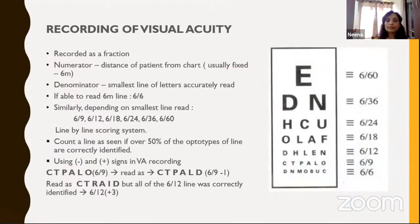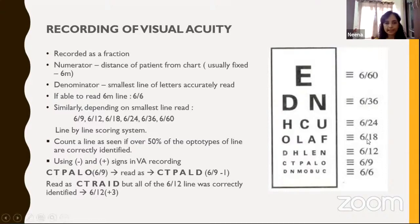How do you record visual acuity? It is recorded as a numerical fraction. The numerator is the distance of the patient from the chart, usually fixed at six meters, and the denominator is the smallest line of letters accurately read by the patient. For example, if the patient reads up to the OLF line, it is denoted as six by 18. It is a line-by-line scoring system — count the line as seen if more than 50% of the optotypes are correctly identified.